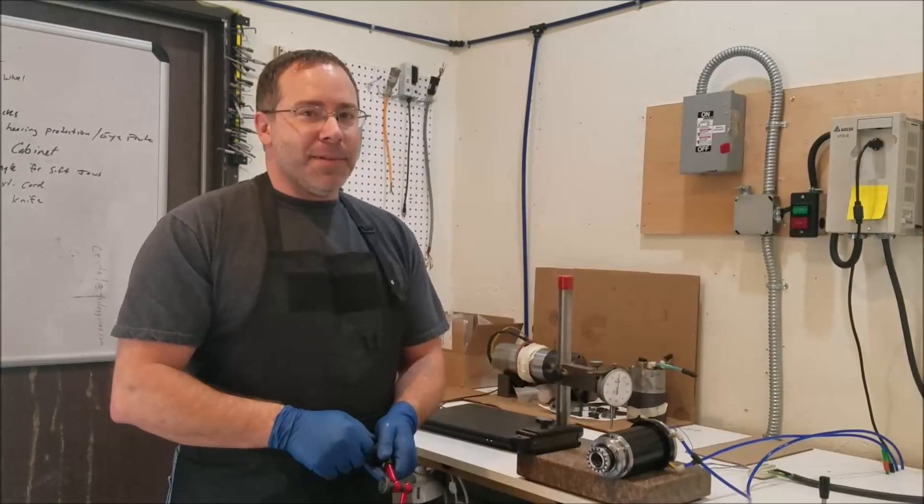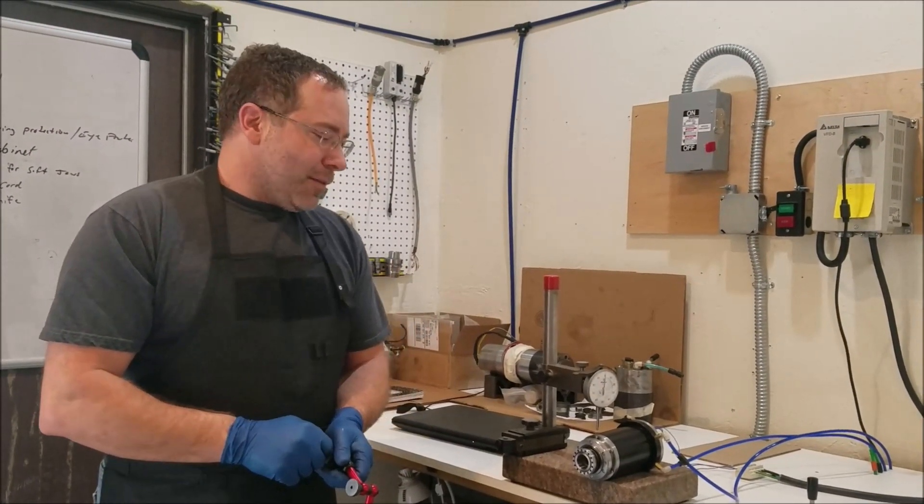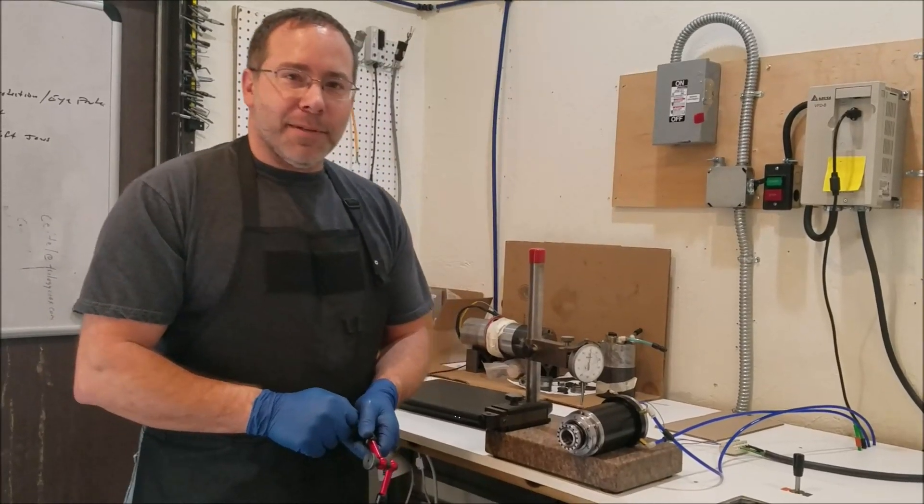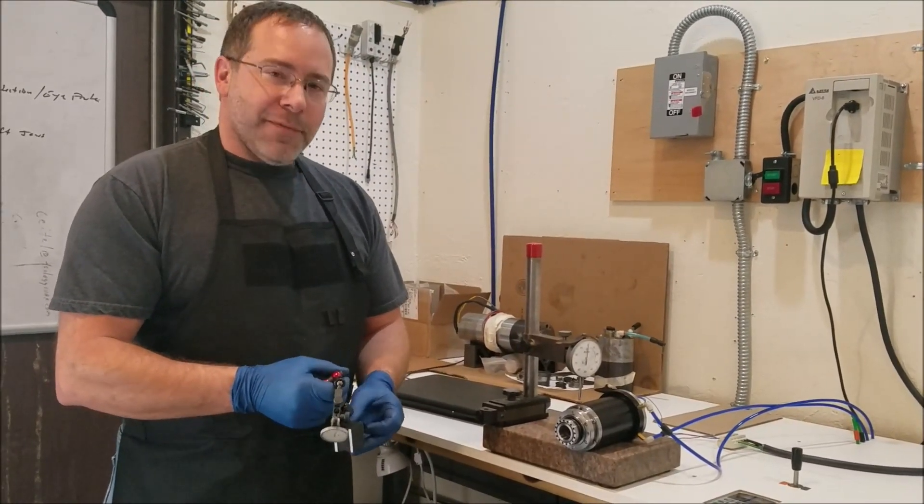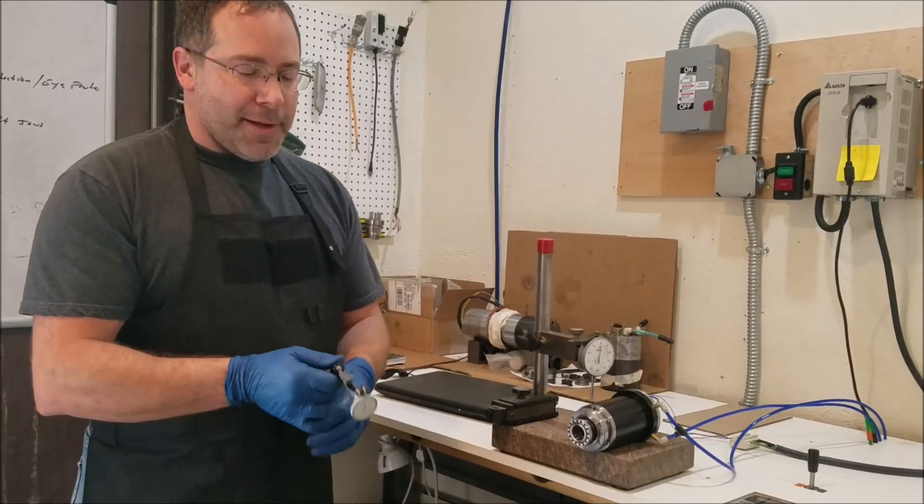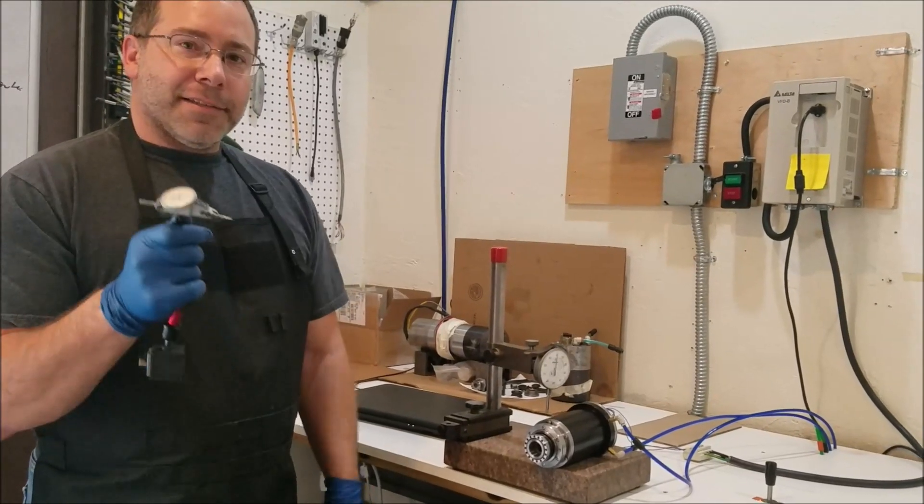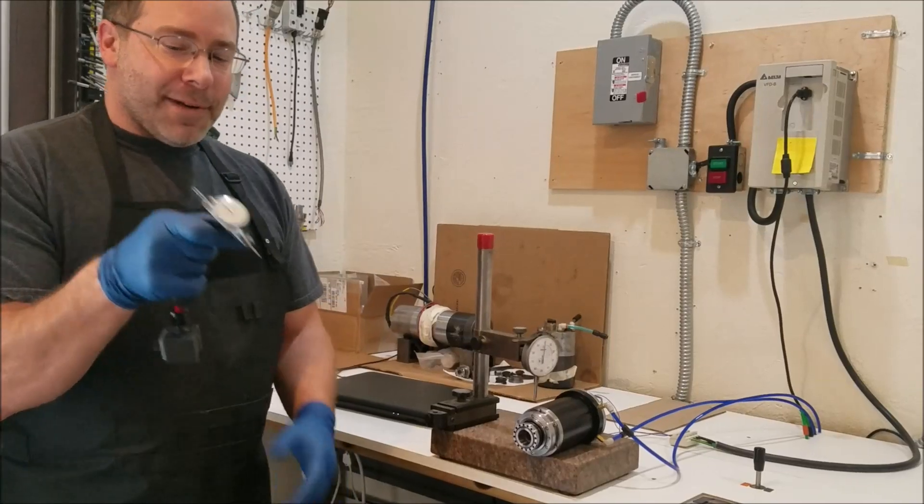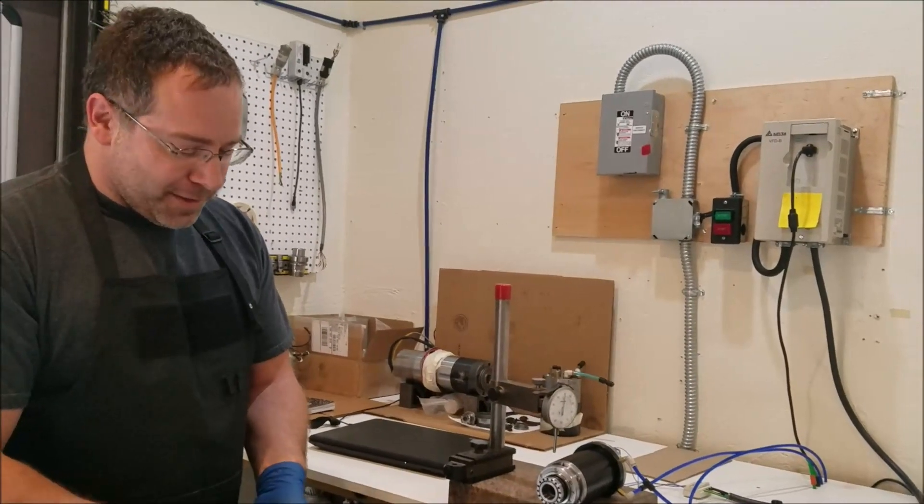Hey guys, this is Tony with HS Spindles, and I want to show you the run-out of one of our 70C spindles. It's an HSK 25E spindle, so we're going to set up a 10 thousandths test indicator on it. We're going to measure the taper and the run-out on the face of the shaft.